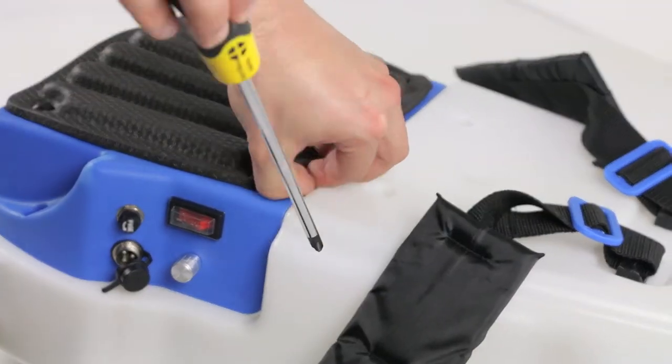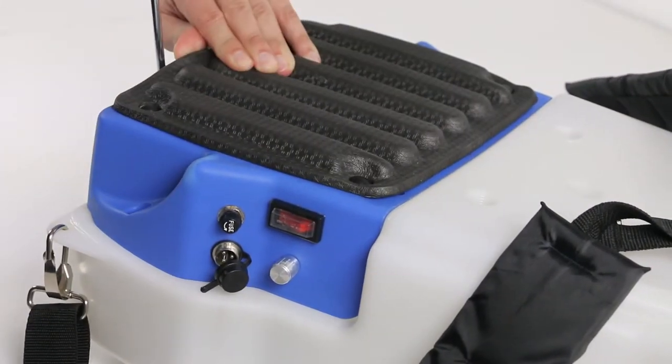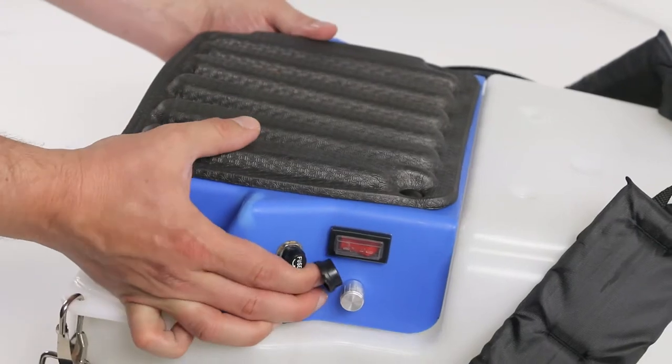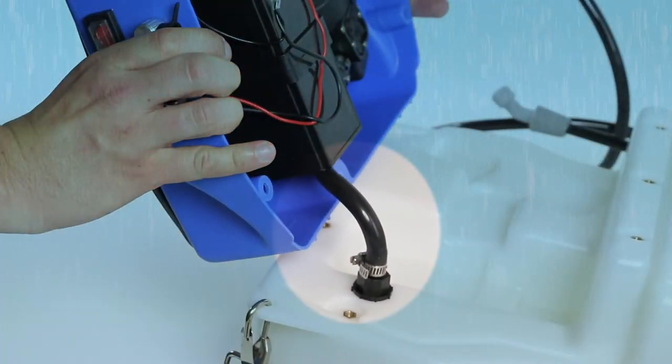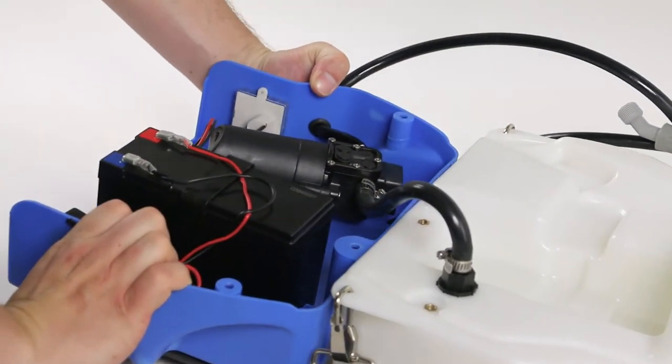Unscrew each of the screws and set aside for reassembly. Once unscrewed, pull the cover away from the unit. The cover will still be attached to the unit via the pump hose, so don't pull too hard on the cover. Rotate the cover and lay it down onto the back padding.